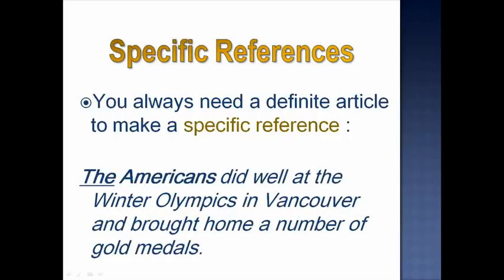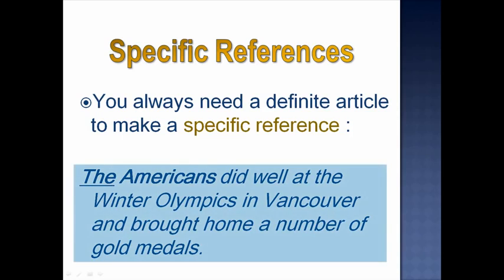Now let's talk about specific references. You always need a definite article to make a specific reference. For example: 'The Americans did well at the Winter Olympics in Vancouver and brought home a number of gold medals.' Here, I'm not talking about all Americans, but a specific group — the athletes who participated in those games.